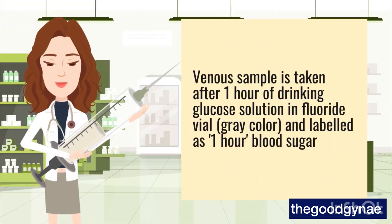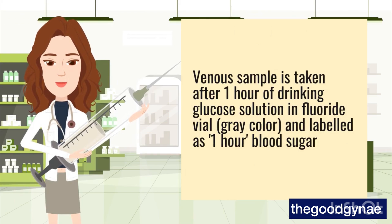A venous sample is taken after 1 hour of drinking the glucose solution in a fluoride vial, gray color, and labeled as 1 hour blood sugar.